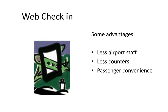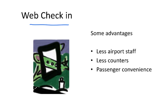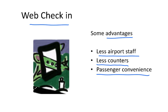Another feature, now adopted by both low-cost and full-service carriers, is promoting web check-in. Instead of sending passengers to the airport for manual check-in, they can check in from their office or home. The advantages are needing less staff at the airport, using fewer counters — which are normally rented from the airport — and giving passengers more convenience, as they can check in at home, at the office, or while commuting to the airport.